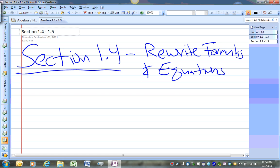what we're doing in this section is trying to get one letter by itself and have it in terms of other letters. For example, let's say I had the following equation.